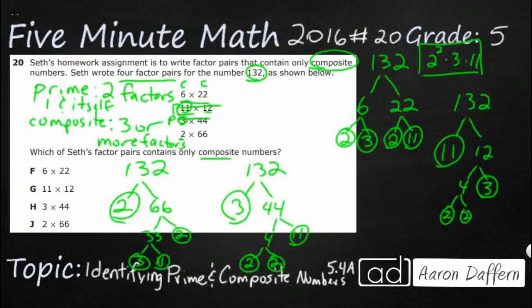So no matter how we break it up, it's 2 twos, a 3 and 11. None of these work because these 3 are all prime: 2, 3, 11. This first one is the only one that works. That answer is F, 6 times 22.